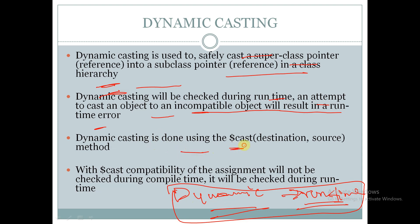Dynamic casting is performed using the syntax $cast(destination, source). With $cast, compatibility of the assignment will not be checked during compile time — it will be checked during runtime. We will discuss more about $cast in upcoming slides.